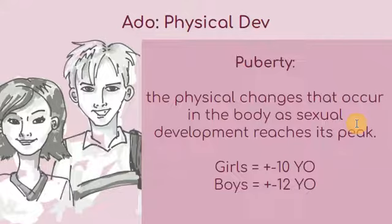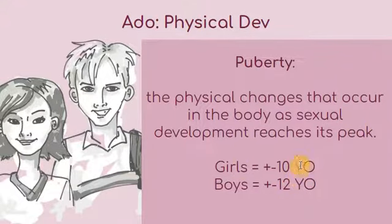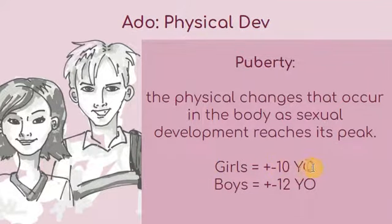One of the functions of marriage is to procreate, untuk nak menyambung zuriat. Akil balik is a stage whereby biologically speaking, the body is actually ready to procreate. Generally, it was found that girls reach puberty at more or less 10 years old, while boys more or less at 12 years old.